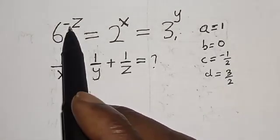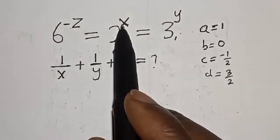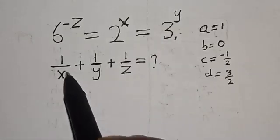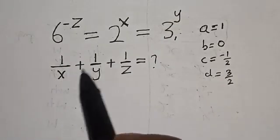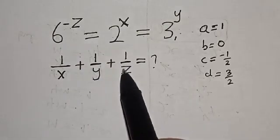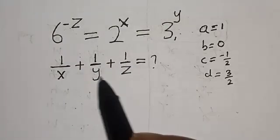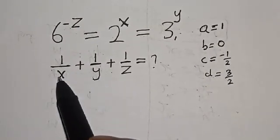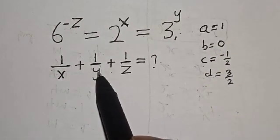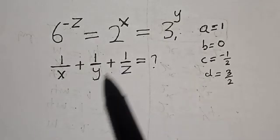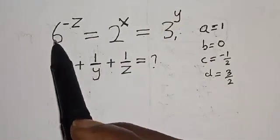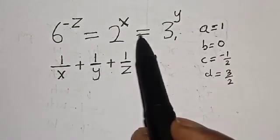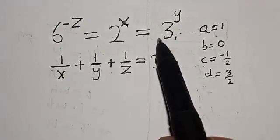6 raised to power minus z is equal to 2 raised to power s, which is equal to 3 raised to power y. What is the value of 1 divided by s plus 1 divided by y plus 1 divided by z? Hi everyone, welcome to my class. In this class we want to find the value of 1 divided by s plus 1 divided by y plus 1 divided by z from this given equation.